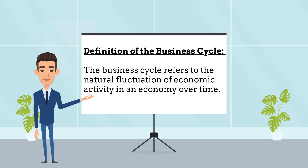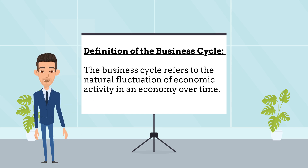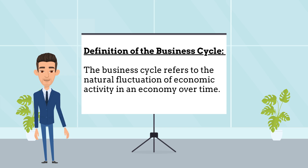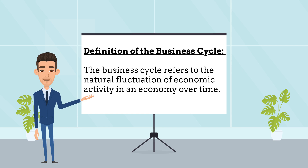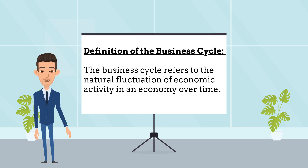The business cycle refers to the natural fluctuation of economic activity in an economy over time. It represents the cyclical pattern of expansion, growth, and contraction, recession, that occurs in a capitalist system, as measured by various economic indicators, such as gross domestic product, GDP, employment rates, and inflation.